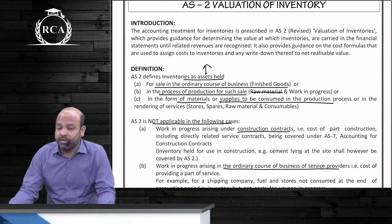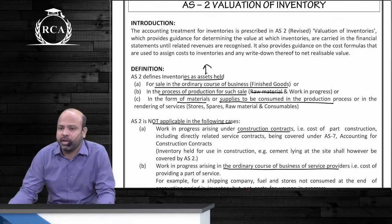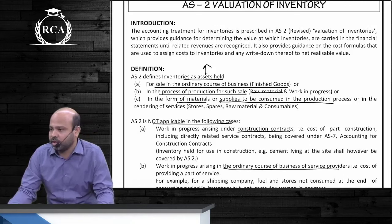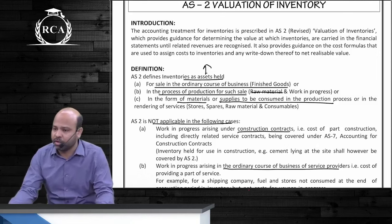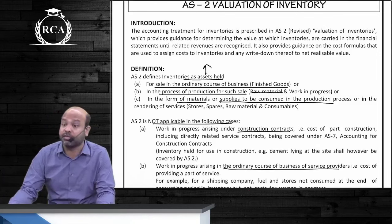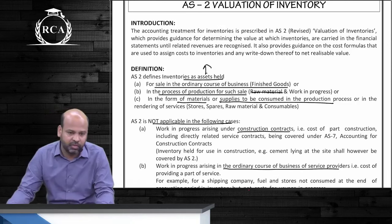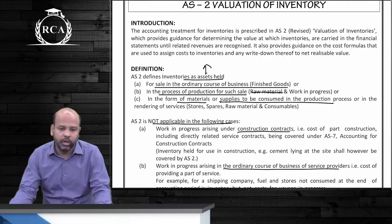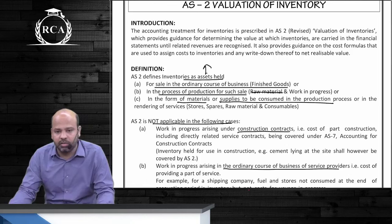The very first thing we cover under this accounting standard is the definition of inventories. Inventories cover assets held for sale in the ordinary course of business — that is finished goods or stock in trade — anything in the process of being converted into a finished product, that is work in progress, or materials and consumables used for manufacturing. This includes raw materials, tools and consumables.